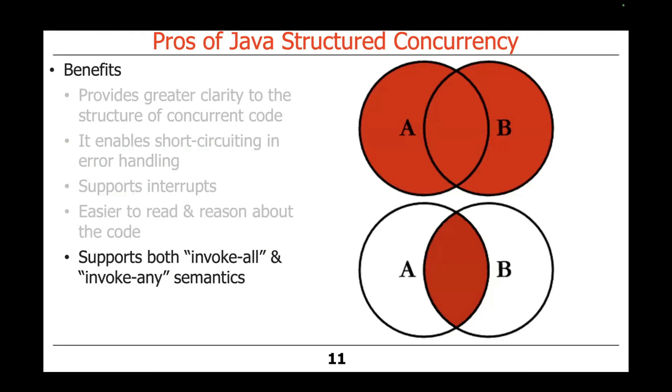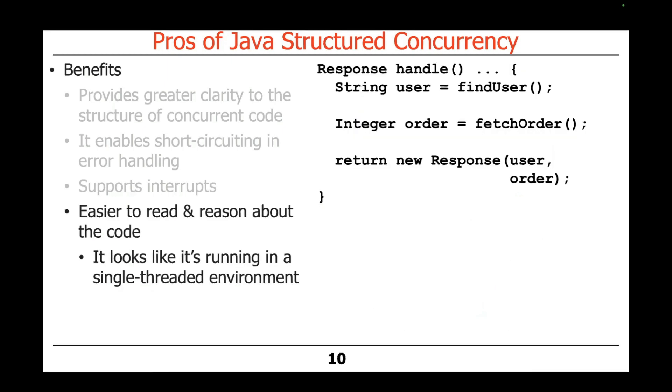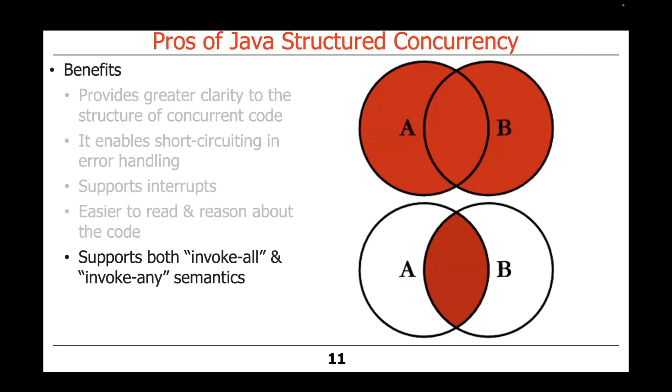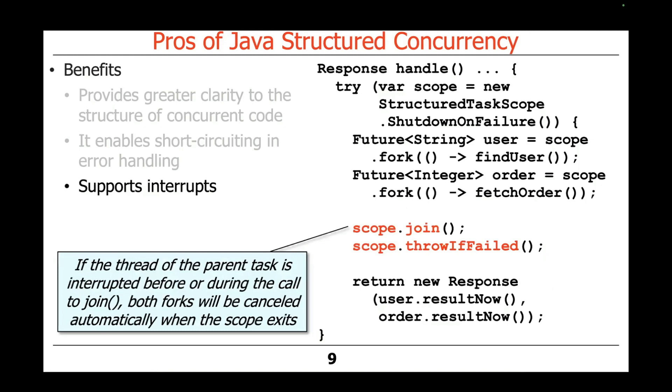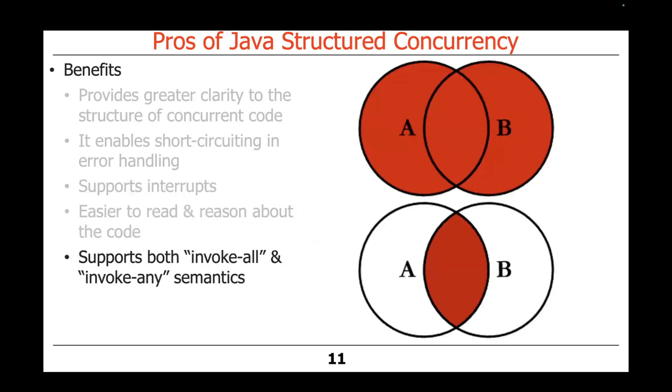Another nice thing about this particular model is you can use structured concurrency to support both invokeAll and invokeAny semantics. So invokeAll semantics are the mechanism that's called shutdown on success. It means run everything, and when they're all done, take the results. Whereas invokeAny semantics come by using shutdown on failure, which means that if something throws an exception, then the first thing that finishes will be the result, and you can cancel everybody else. And we'll talk more about that in the context of some case studies that we'll go over in the next class.